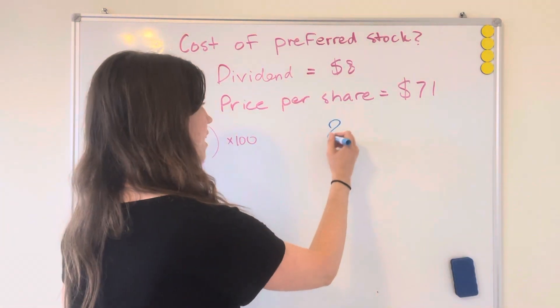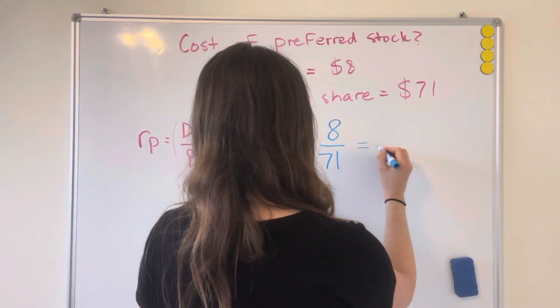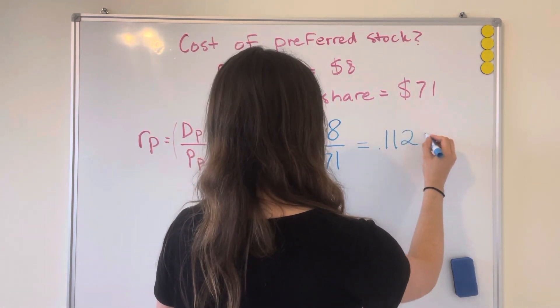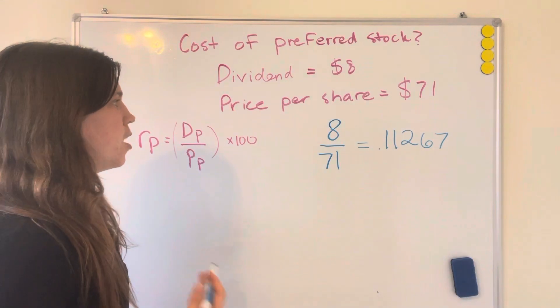All you're going to do is take 8, divide it by 71, and that's going to be .11267. So as you can see, we're dividing our dividend by our price per share.